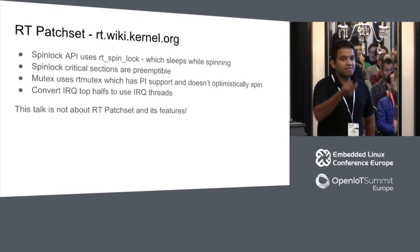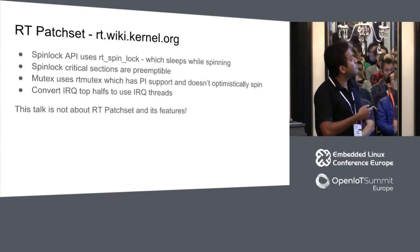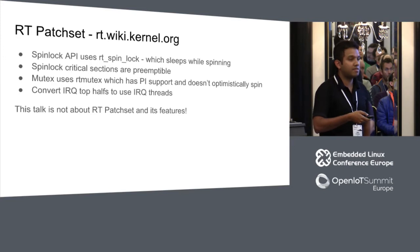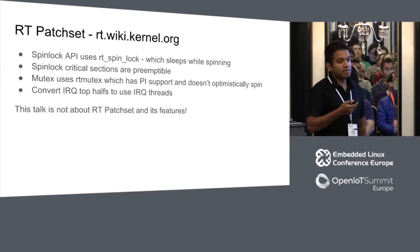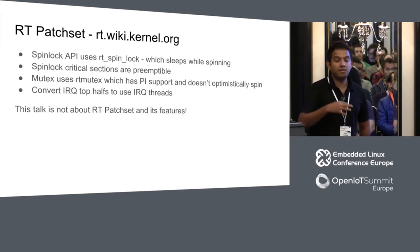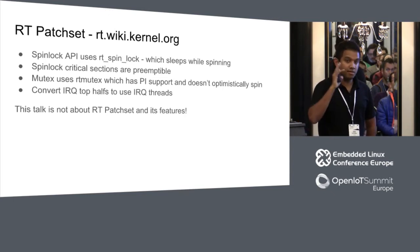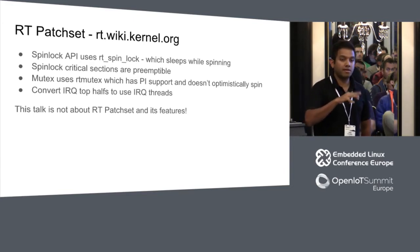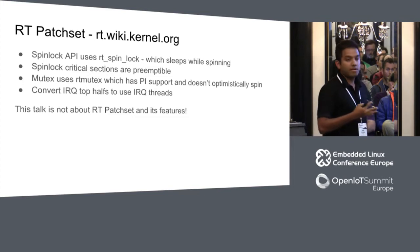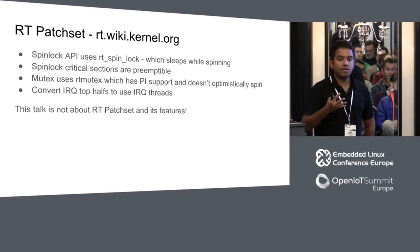The RT patch set converts spin locks to RT spin locks, which don't really turn off preemption — so spin lock critical sections are preemptable. With CONFIG_PREEMPT_RT, mutexes are converted to RT mutexes with priority inheritance support. All IRQ top halves are force-threaded. The idea is you don't want to run things with interrupts turned off; instead you want your handler to run such that it can be preempted. But this talk is really about debugging and the tools I used.